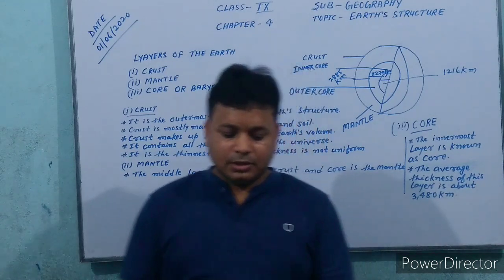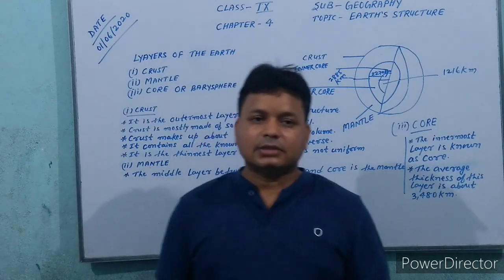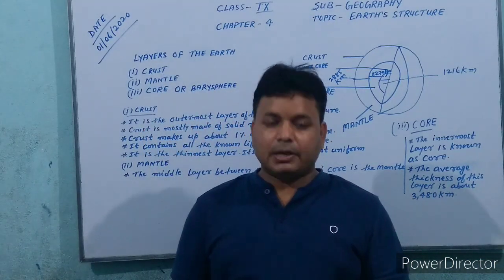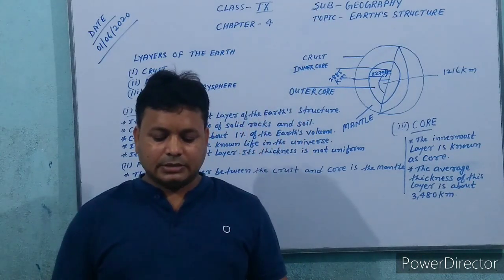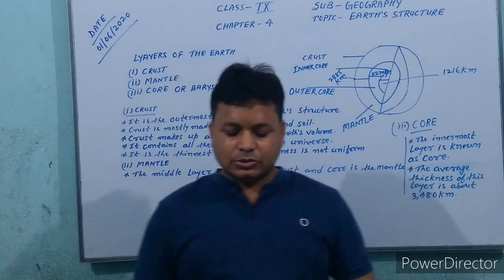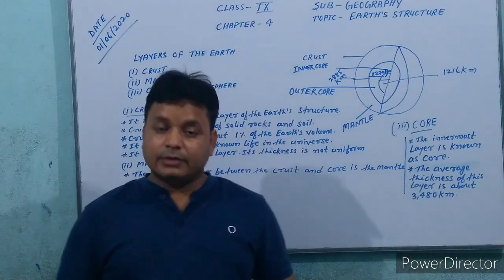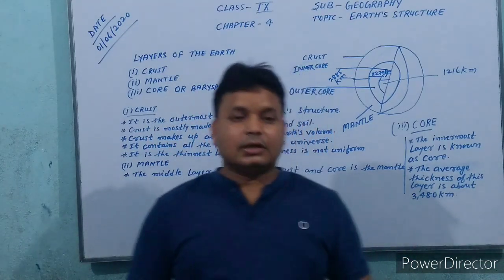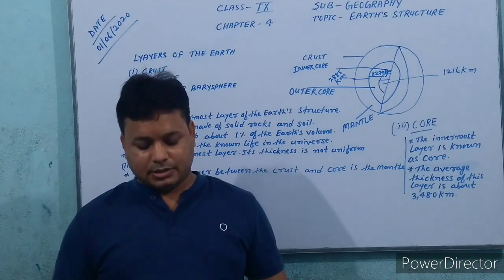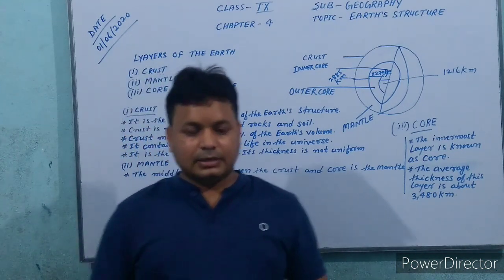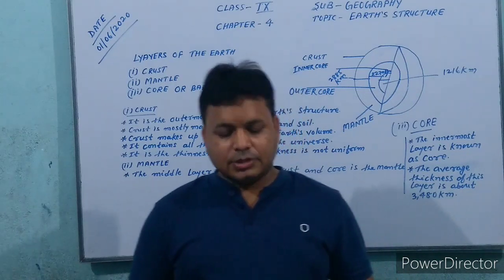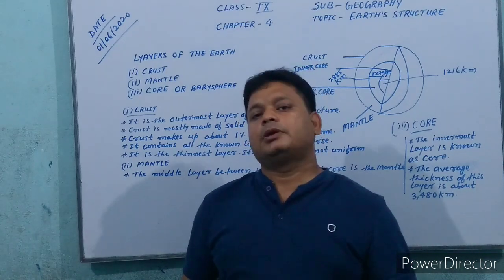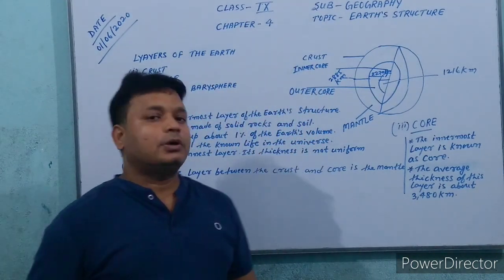To recap Earth's structure: formation theories include continental drift theory and plate tectonic theory. The core includes the outer liquid core and inner solid core, with the Gutenberg discontinuity at their boundary. The crust includes the continental crust and oceanic crust, separated from the mantle by the Mohorovičić discontinuity. The mantle includes the asthenosphere, transition zone and mesosphere. Please note down the important points in your notebook.